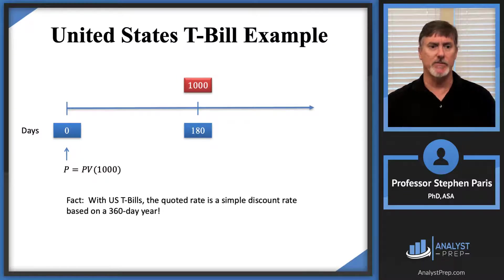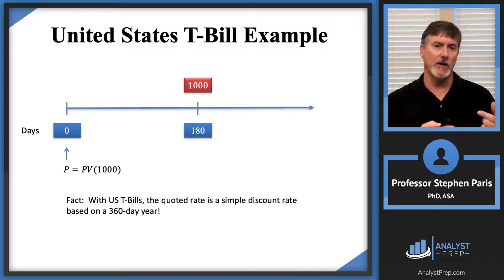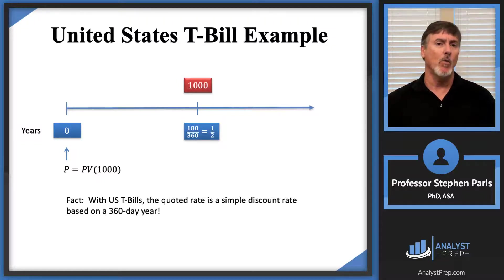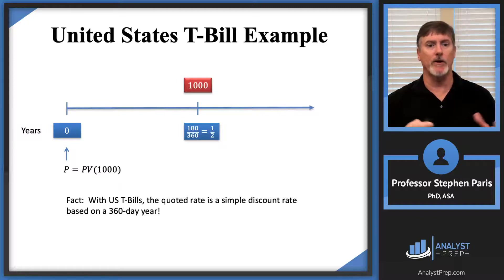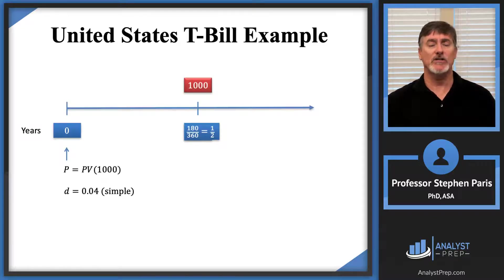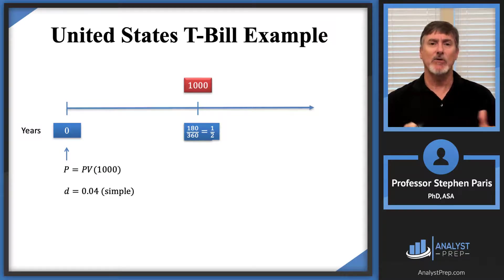Going back to the US T-Bill: we have a simple discount rate based on a 360-day year. I need to convert the timeline from days to years. The 180 days corresponds to 180 divided by 360, or one-half — that's the time at which the T-Bill matures. Now, the quoted rate of 4% is a simple discount rate.